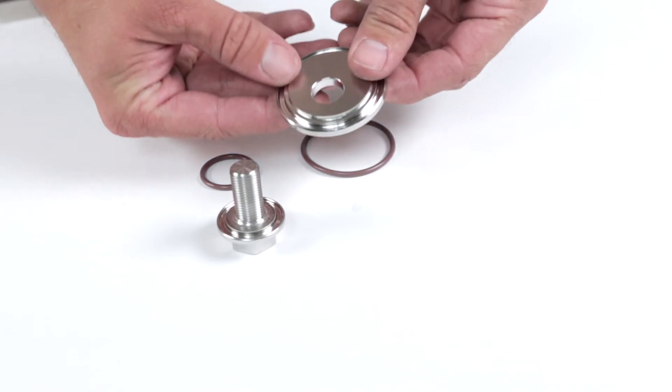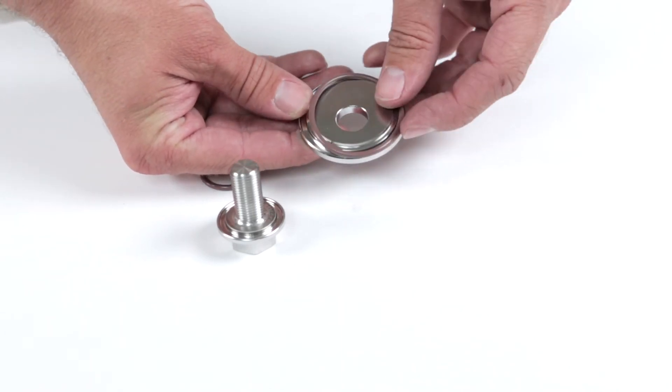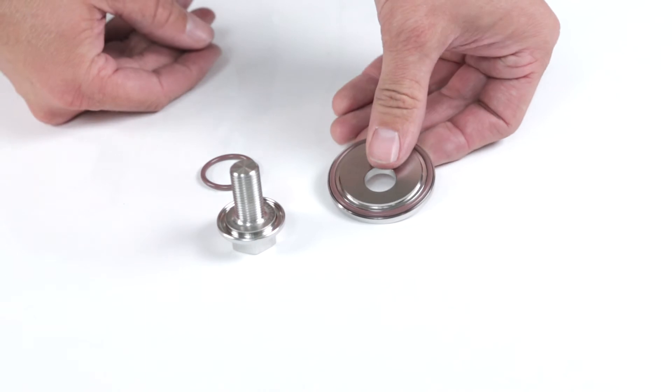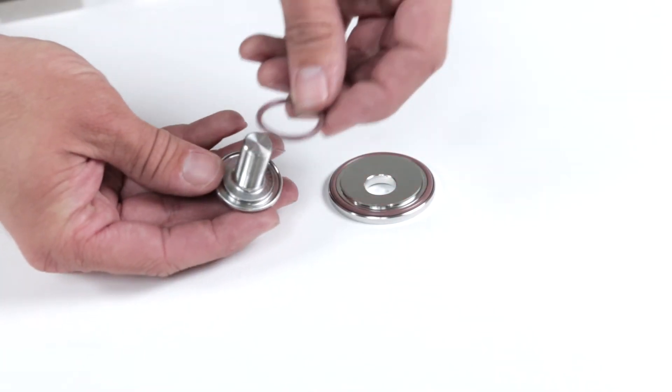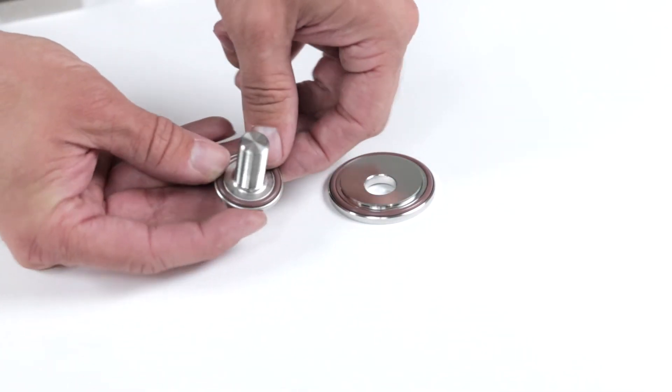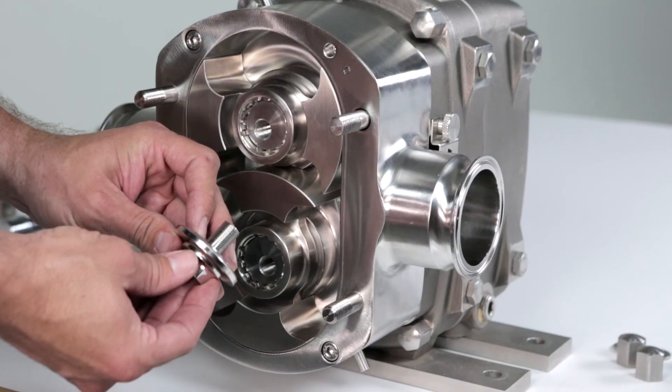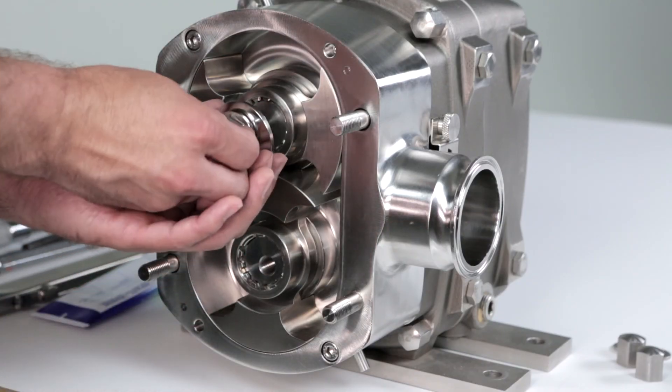Install the rotor bolt washer o-rings onto the rotor bolt washers. Install the rotor bolt o-rings onto the rotor bolts. Install the rotor bolt assemblies onto the rotors.